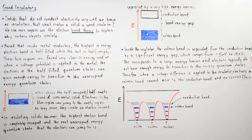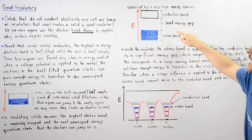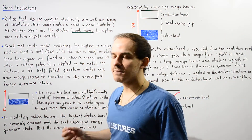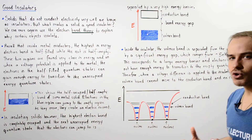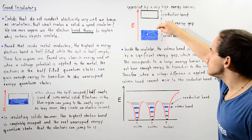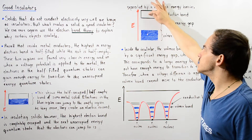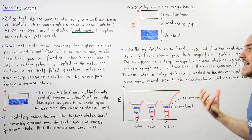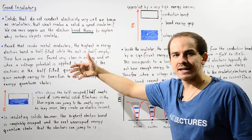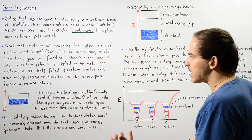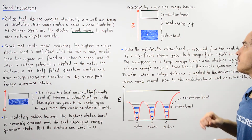Inside the insulator, because the occupied and unoccupied states are separated by a very high energy barrier, when we do apply an electric potential difference to our solid object, our electrons cannot actually gain enough energy to transition and jump to the conduction band. Because electrons cannot transition to this band, we cannot create an electric current. That's exactly why certain objects, such as glass, do not conduct electricity very well — because of the separation of energy.